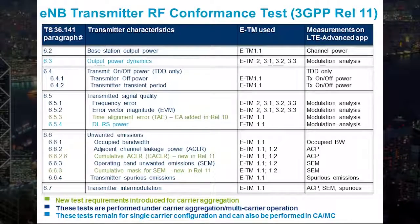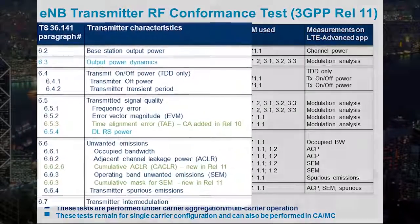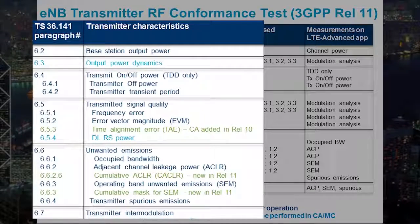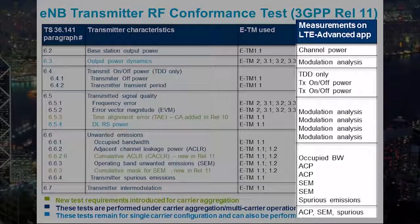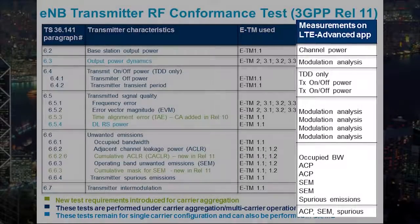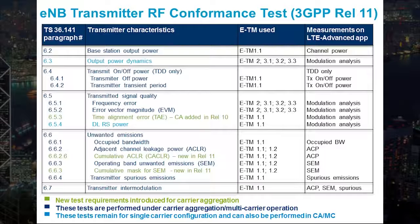Here's a list of base station transmitter tests as defined in Section 6 of 3GPP TS 36.141 specification, as well as the list of corresponding measurements on the Agilent X-Series LTE Advanced measurement application covering all the tests. For those of you that have experience with LTE, these should look very familiar. There are new tests introduced for LTE Advanced as a result of carrier aggregation, highlighted here in green.